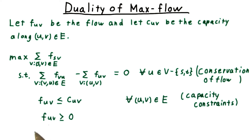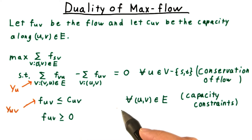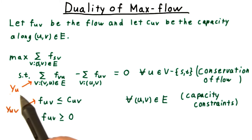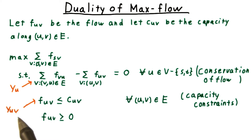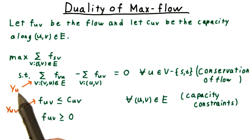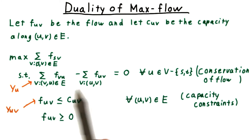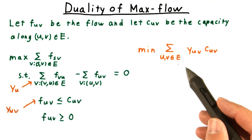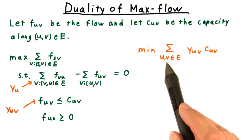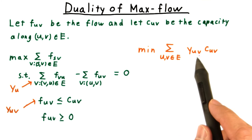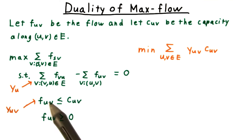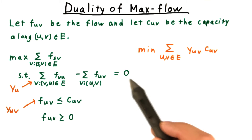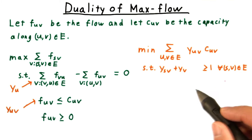Flows must be non-negative as well. To express the dual, we'll use y_u for the conservation constraints and y_uv for the capacity constraints. Two subscripts mean a capacity constraint; one subscript means a conservation constraint. The dual problem is to minimize the sum over all the edges of y_uv times c_uv. Note that the y_us have no role in the objective function because their coefficients are zero.